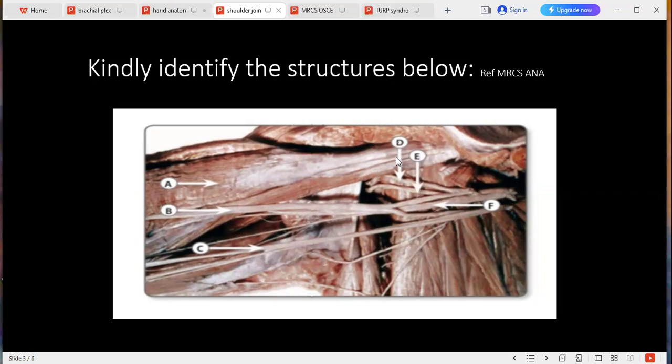G, if you can identify please. This is the circumflex humeral vessels, anterior circumflex humeral vessels. Okay. All right. What are the trunks you said of the brachial plexus?